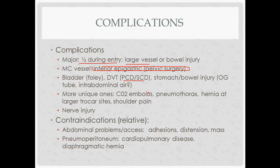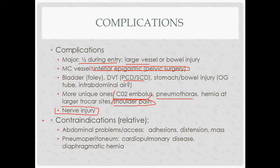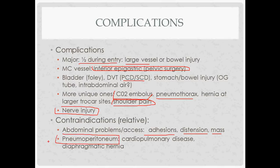More unique complications of laparoscopic surgery and pneumoperitoneum creation include CO2 embolus, pneumothorax, hernia at large trocar sites, and shoulder pain from diaphragm irritation — C3, 4, 5 referring up to the shoulder. Nerve injuries from patient positioning include peroneal nerve injury causing foot drop, and lateral femoral cutaneous nerve injury causing anterior thigh anesthesia. Contraindications fall into two categories: things that make abdominal access dangerous, like adhesions, distension, or masses; and things that make pneumoperitoneum creation dangerous, like cardiopulmonary disease, diaphragmatic hernia, or a VP shunt draining into the abdomen.